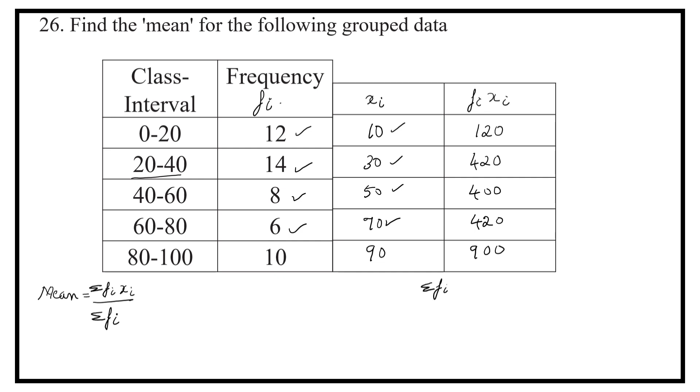Now let us add the numbers in the fourth column to get sigma fi xi. 0, 0, 0, 2 plus 2, 4, 4 plus 2, 6, 1 plus 4, 5, 5 plus 4, 9, 9 plus 4, 13, 13 plus 9, 22.